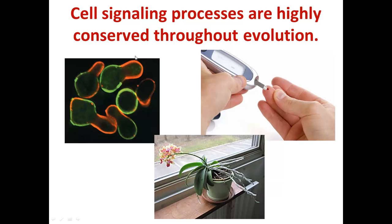Here you see another signaling process — this is an example of phototropism, where plants grow towards a light source. This is controlled by a signal called auxin, which drives this phototropism process.